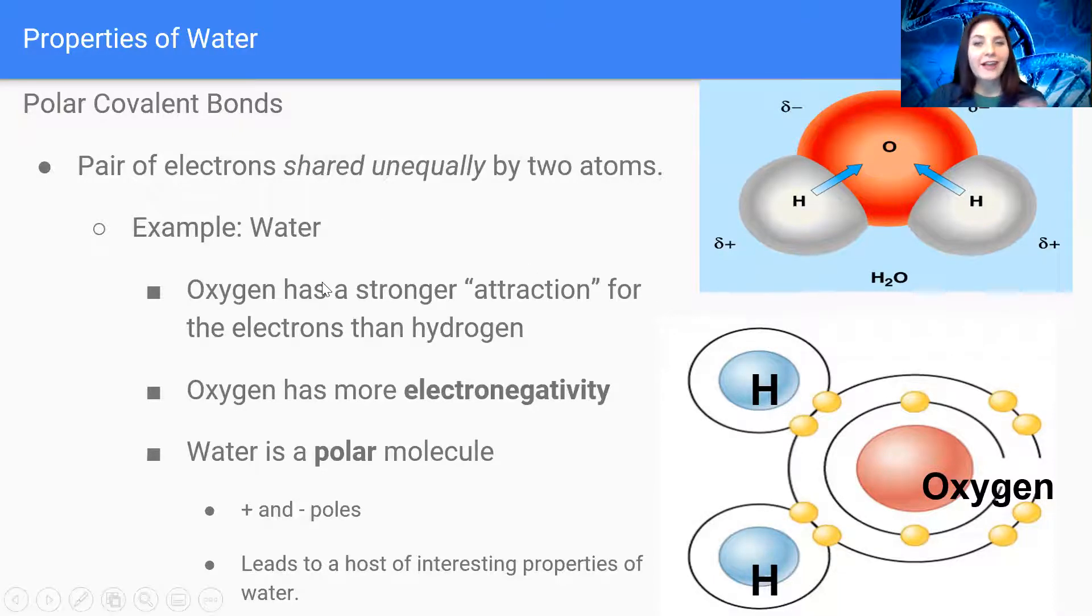The oxygen atom is a little bit more negative and the hydrogen atoms are slightly more positive. The oxygen has a stronger attraction for the electrons than the hydrogen does, and that's what makes it that negative charge. Water is polar, meaning it has little poles just like a magnet, and it leads to a huge array of different properties that allow us to live in the world in which we live.